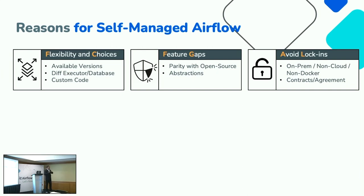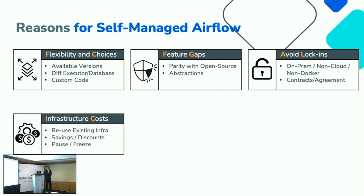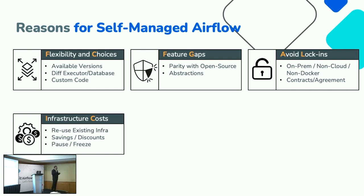The third category is that you may not want to sign agreements or enter a pay-as-you-go billing model, or you're still learning on-premises environments where a managed service is difficult to deploy. The fourth category is infrastructure cost savings — maybe you have idle servers where you can deploy Apache Airflow, or you want to destroy, pause, and freeze the environment based on variable demand, like shutting it down over Christmas and spinning it back up in January.